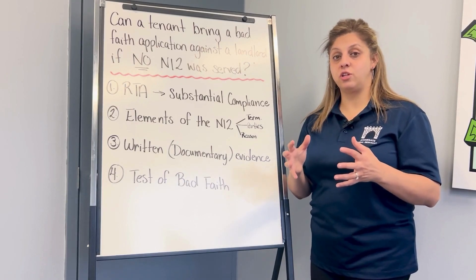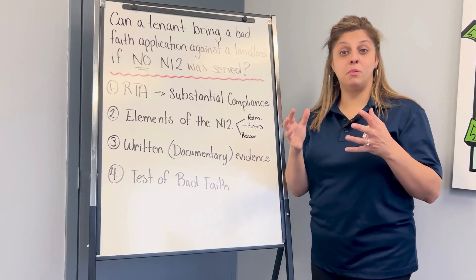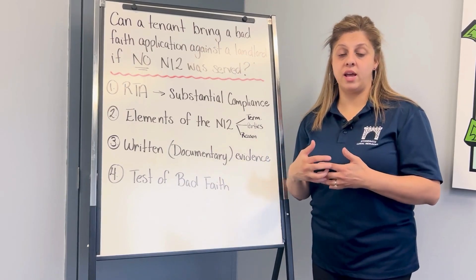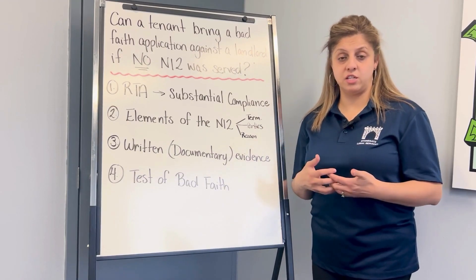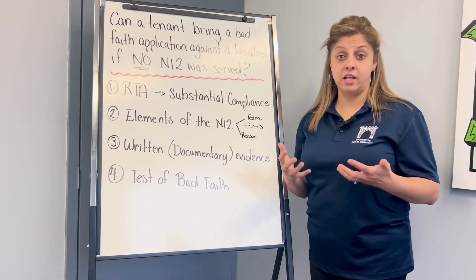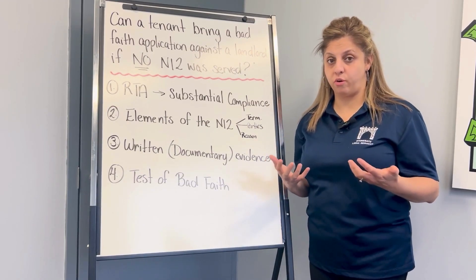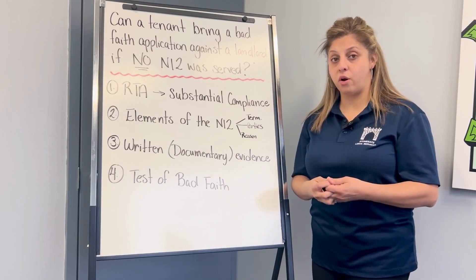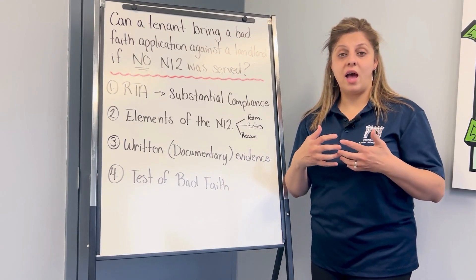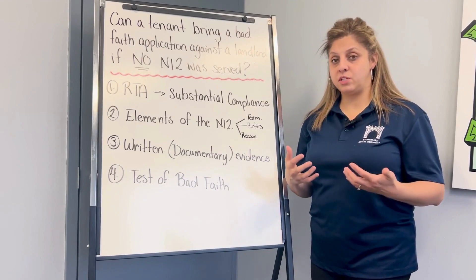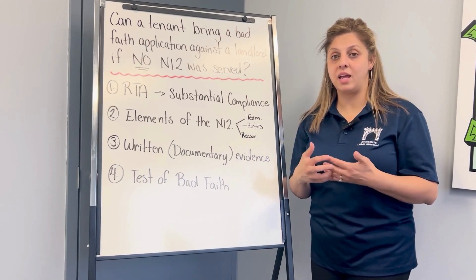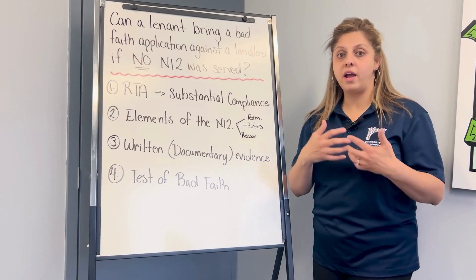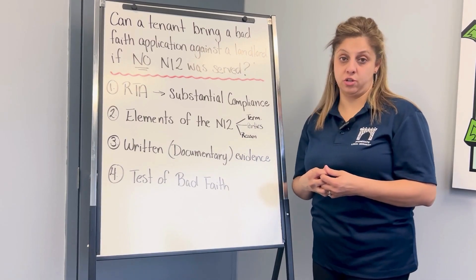If the tenant actually complies with that email and they move out, and they find out that there's now an advertisement of the landlord asking for a thousand dollars more for rent, and they bring an application to the board — the landlord must now advocate their position at the board and explain why they sent the email and why their circumstances changed.